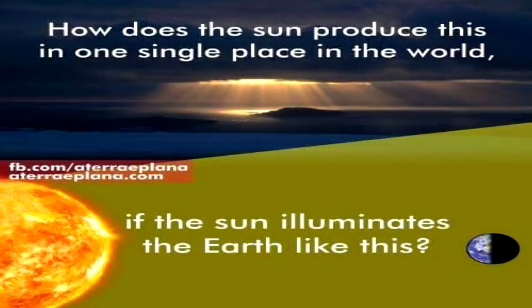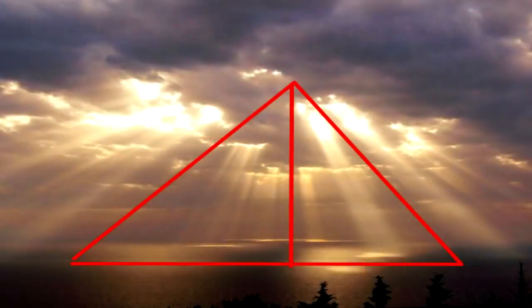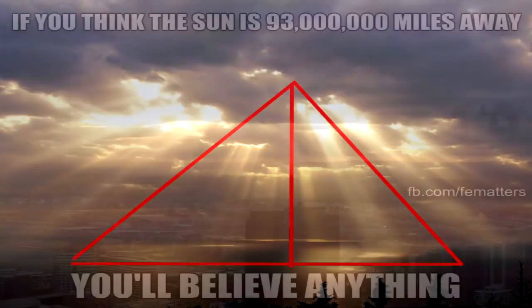Eratosthenes' calculations were made assuming the sun to be millions of miles away so that its rays would fall perfectly parallel, even in points as divergent as Syene and Alexandria. Anyone familiar with the phenomenon known as crepuscular rays, however, knows full well that the sun's rays simply do not fall perfectly parallel, especially at such distant points, rendering the entire argument moot.